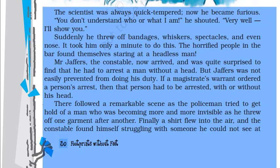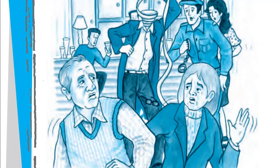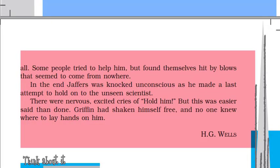Mr. Jafar, the village police constable, was called to arrest Griffin. Meanwhile, Mrs. Hall asked Griffin to explain all the unusual happenings. Griffin lost his temper and decided to reveal all. He started removing his clothes, and even Jafar could not catch someone whom he could not see. He was knocked out unconscious by the invisible man who escaped, with excited cries of 'Hold him!' But this was easier said than done. Griffin had shaken himself free and no one knew where to lay hands on him.